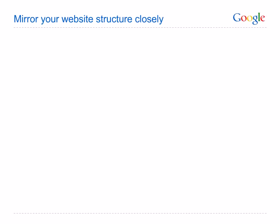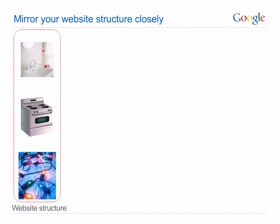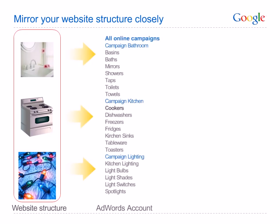Mirroring your website structure is an effective way to give a good structure to your account — they should both be organised according to your categories of products and services. Let's look at an example of an online home retailer, Superkitchen.com. Imagine the website is structured into three sections: bathroom, kitchen and lighting products. The AdWords account advertising for this website should also be organised the same way with three campaigns for each section: campaign bathroom, campaign kitchen, and campaign lighting. Each campaign is divided into specific ad groups for products belonging to each section. The kitchen campaign is divided into ad groups for cookers, dishwashers, freezers, fridges, kitchen sinks, tableware and toasters.